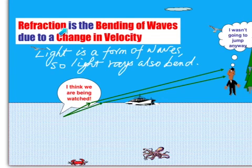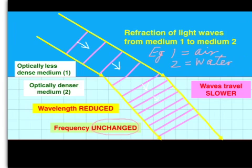Refraction. What is refraction? It is a bending of waves due to a change in velocity. Light is a form of waves, so light rays also bend.